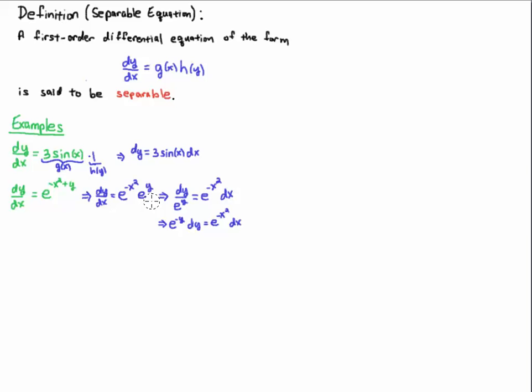So now what I'm going to do is, if I want to break this up with the differential form again, I can divide both sides by e to the y and leave e to the minus x squared there. That's the g of x.